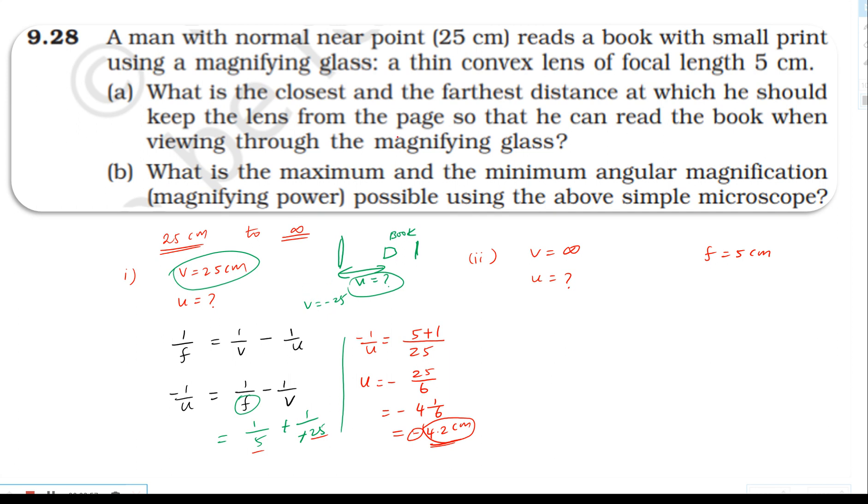So the minimum distance, the closest distance, is 4.2 centimeter. For the farthest distance, when the image is at infinity: one by f equals one by v minus one by u. Here v is infinity, so one by infinity is zero. Therefore one by u equals one by f, which means u equals minus f, which is minus five centimeters. So the farthest distance where the book should be placed is five centimeter to get the image at infinite distance.